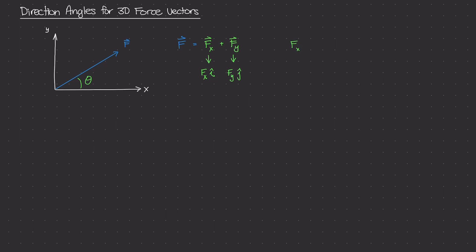The scalar quantity F_x was equal to the magnitude of the force vector times the cosine of theta. And we did the same thing for F_y: F_y was equal to the magnitude of the force vector times the sine of theta. So in one case we were using cosine, and in the other we were using sine.